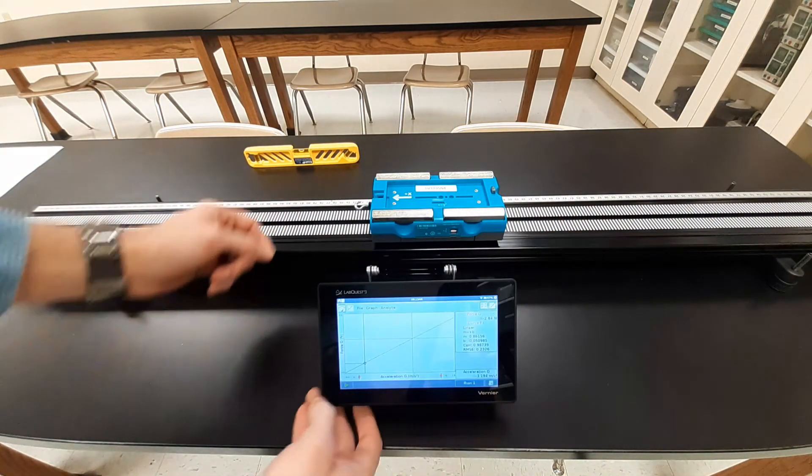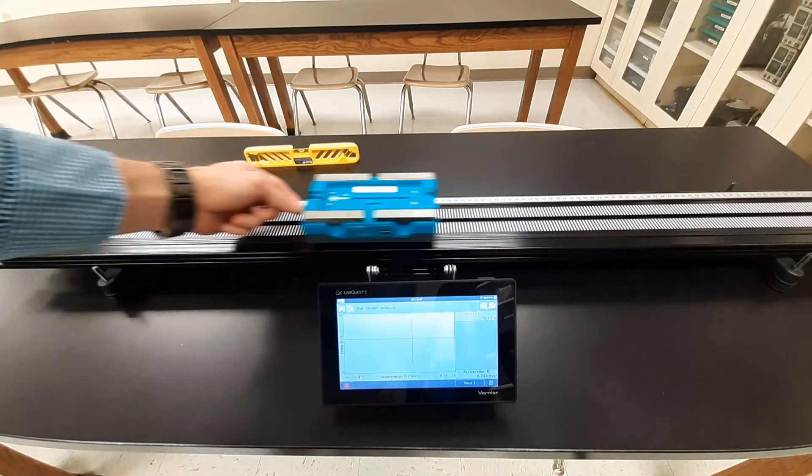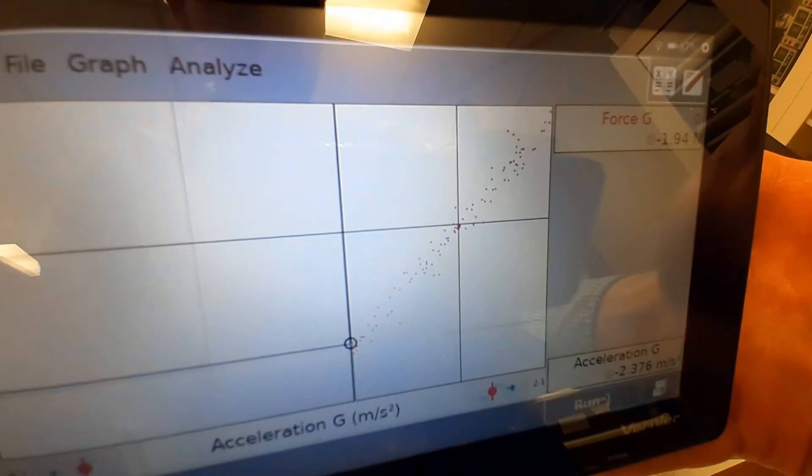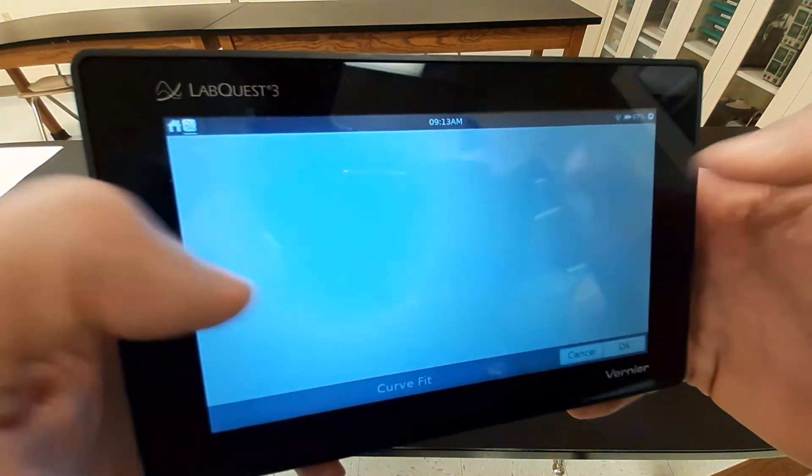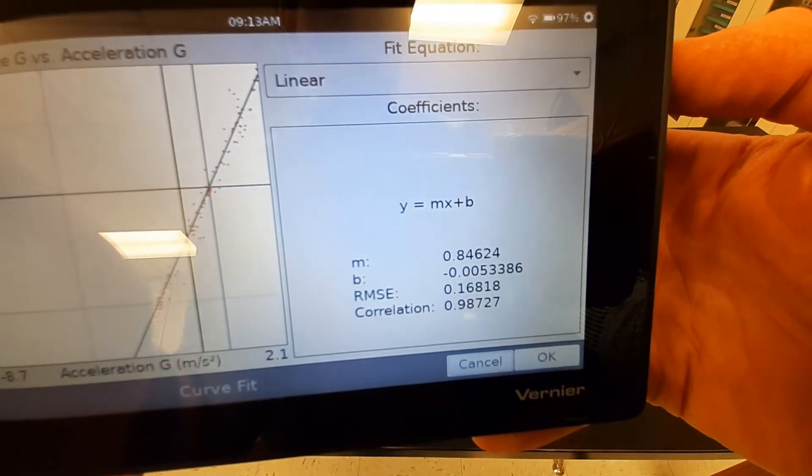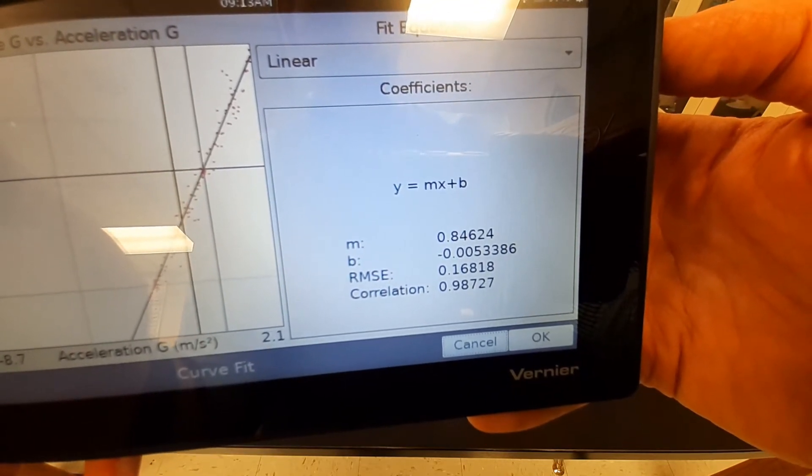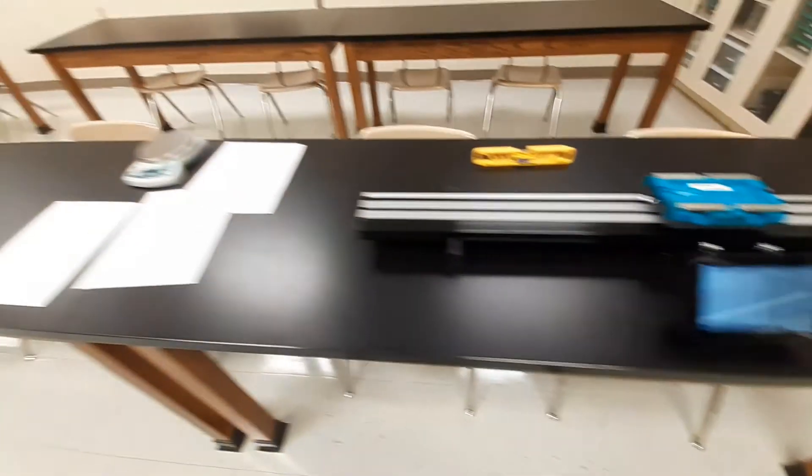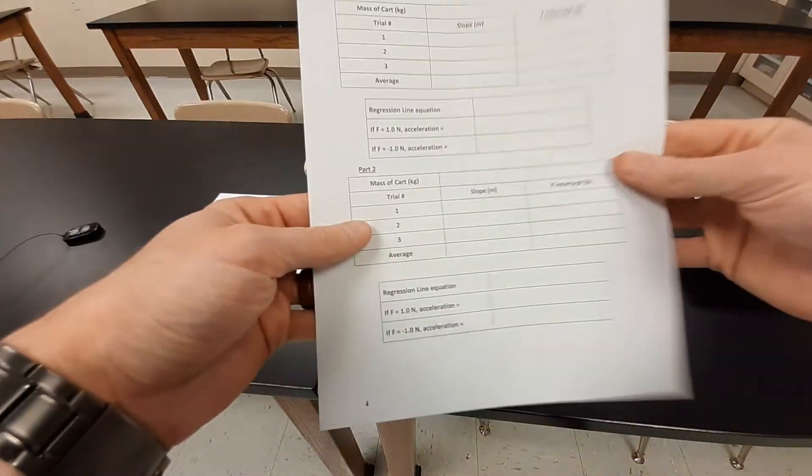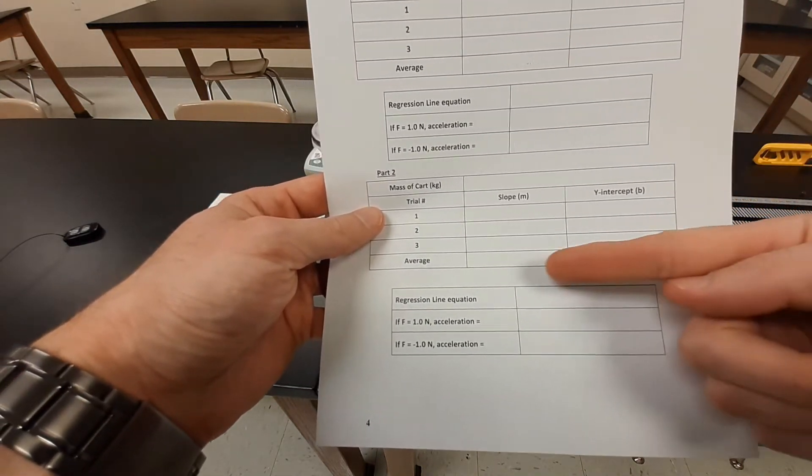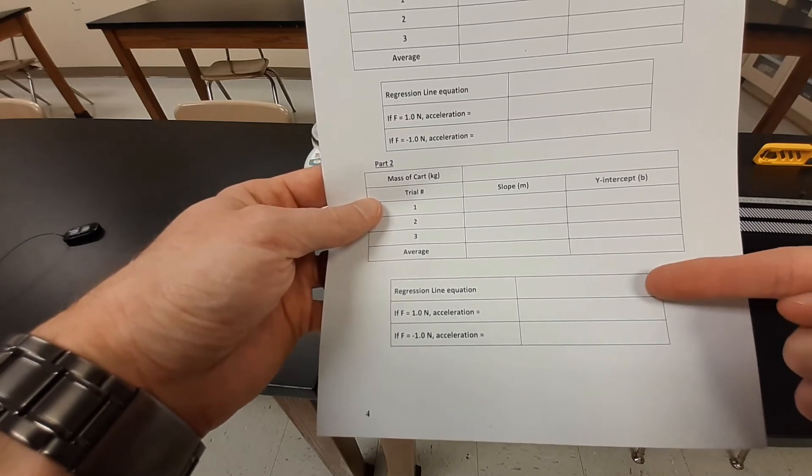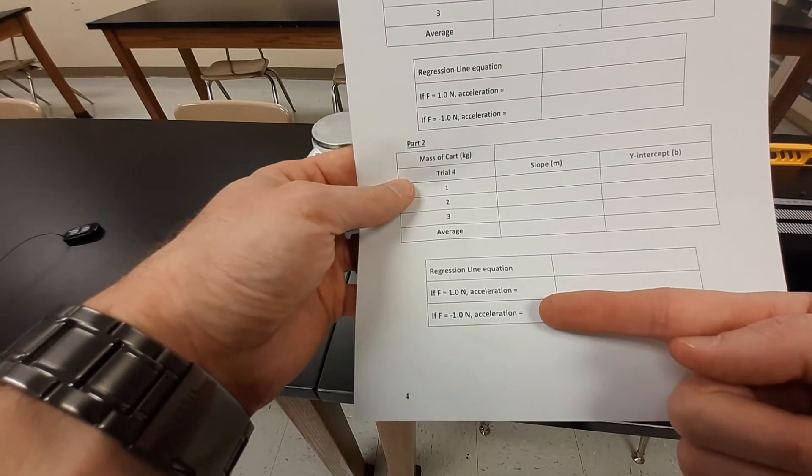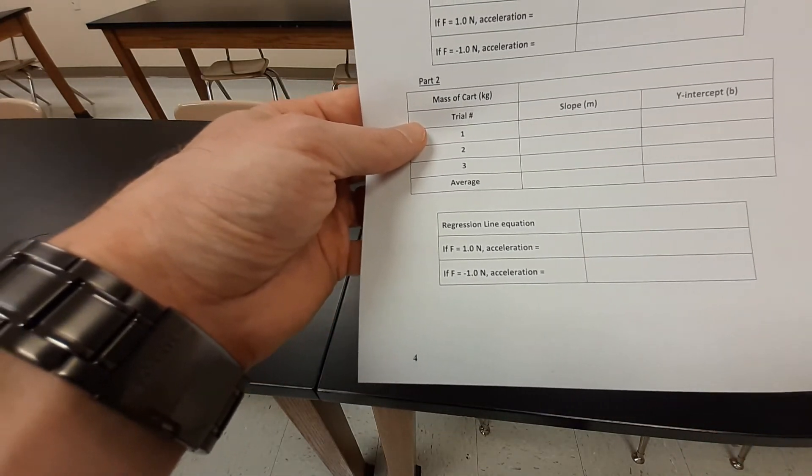Now part two, trial number three. So I'm going to start that data collection, move my car around here, and now analyze this data. Analyze curve fit the force. And this time we get a slope of 0.846 and a y-intercept of negative 0.00534. So that's all three trials for part number two. You're going to want to do that data the same way you did on part number one. Average those three slopes, average those three y-intercepts, use that to write your slope-intercept formula, y equals mx plus b, and then plug in what if your force were positive one? What's your acceleration? And if you have a force of negative one, what acceleration or what x value would that create?